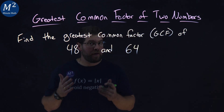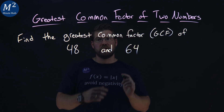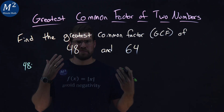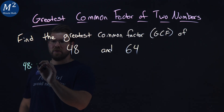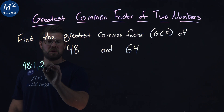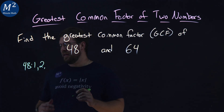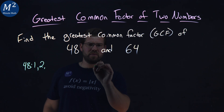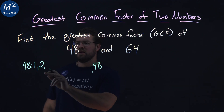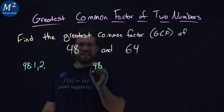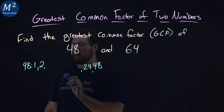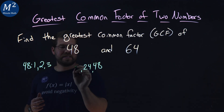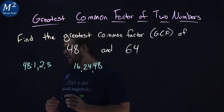We want to first list the factors of each number. So let's go with 48. Let's list the factors. 1 goes into 48, 2 goes into 48 — that's going to be 24 times. So 1 and 48, and 2 and 24. Then we have 3 and 16 — 3 times 16 gets us 48.